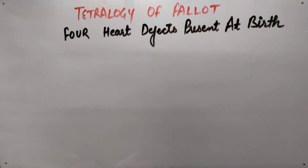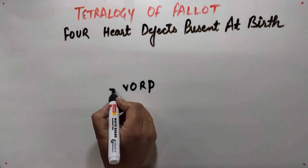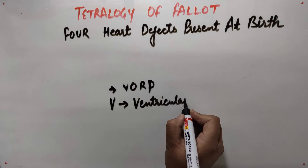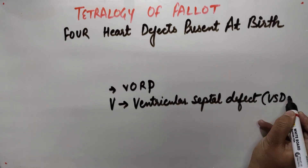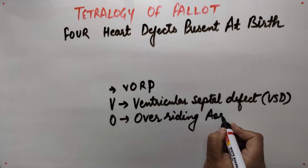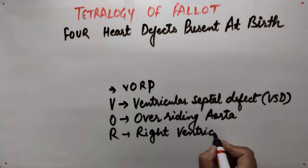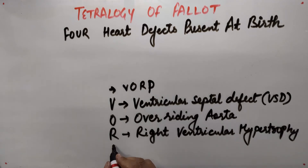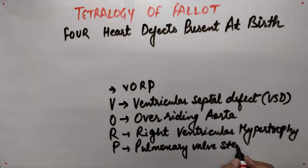To understand the heart defects in an easy way, I also included one more mnemonic which is VORP, which covers the four defects. V stands for Ventricular Septal Defect, which is VSD. O stands for overriding of aorta. R is right ventricular hypertrophy. And P stands for pulmonary valve stenosis.